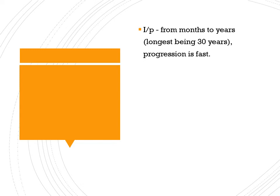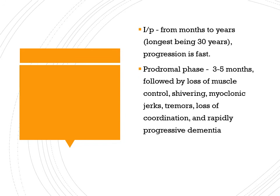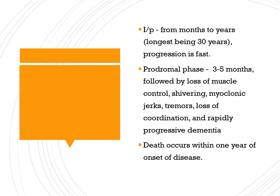In the prodromal phase of three to five months, symptoms include loss of muscle control, shivering, myoclonic jerks, tremors, loss of coordination, and rapidly progressive dementia — which is loss of memory. Death can occur within one year of disease onset, and mortality is almost 100 percent.